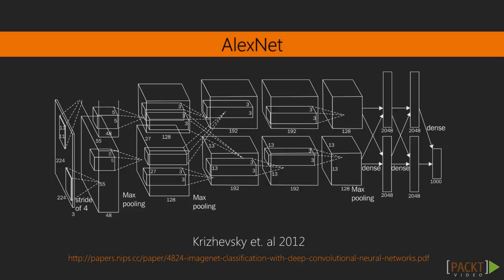Here's how AlexNet looks. It is a seven-hidden-layer deep neural network. The first five layers are convolutional, followed by pooling layers. The last two are fully connected layers. If we get the results from the very last output layer, we will have the class probabilities used for classification. But if we get the outputs from a previous layer, we can use them as representations or features of our input, and train our own classifiers on top of the network. People refer to this as chopping off the very last layer of the network and training a new one on top of it.